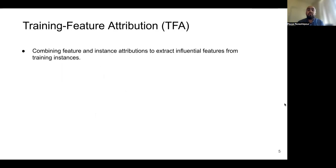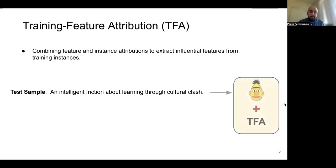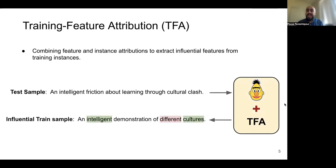As a result, we introduce training feature attribution. The goal here is to explain model prediction by extracting important features from training instances. We do that by combining different feature and instance attribution method. For example, here on this sentiment analysis task, if we provide this sample to the model and using training feature attribution, the goal is to highlight most positively and negatively influential features from different training instances, as we can see here.